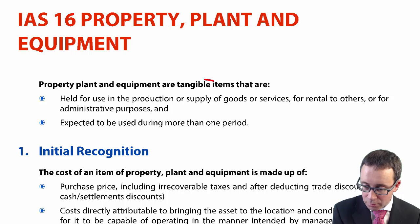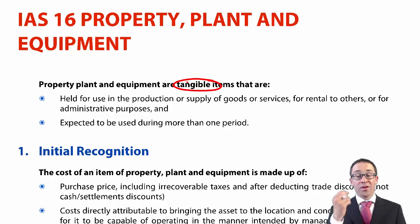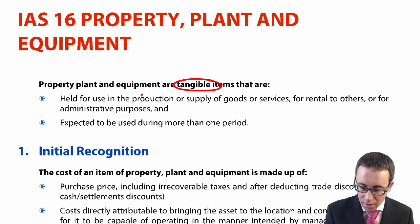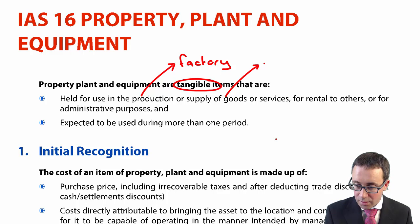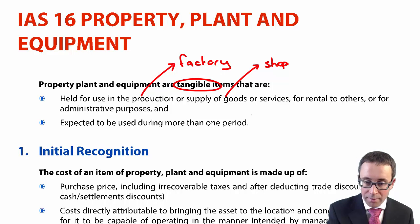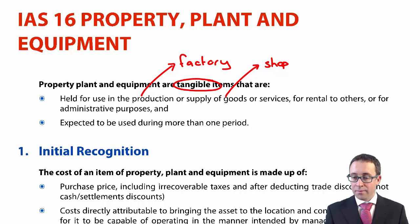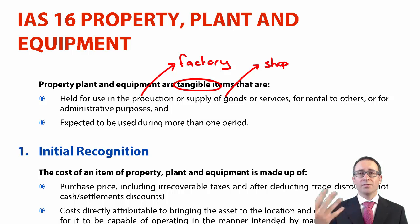Tangible assets have physical substance and are used in the production or supply of goods. So in terms of production, think about your factory. In terms of supply of goods or services, maybe your shop premises. For rental to others, maybe a machine that you rent out to somebody else — that's also a tangible asset which would be property, plant and equipment.